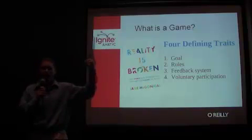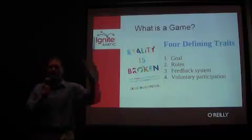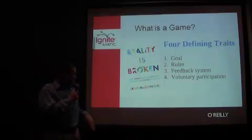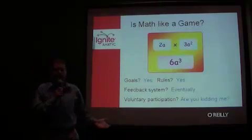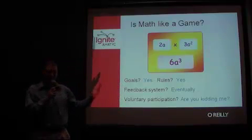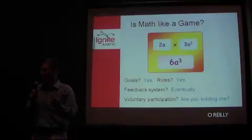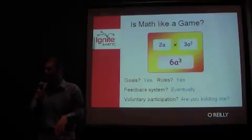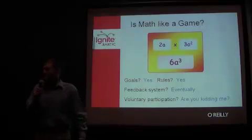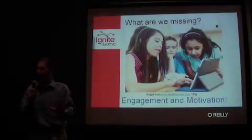A game has four things: a goal, a rule, feedback, and voluntary response. So my question to you is, does math have goals? Yeah. Does it have rules? Of course. Does it have a feedback system? Well, eventually we'll tell them right or wrong, or somebody else will have a homework system. But how about voluntary participation? We're so close — we get like three out of the four for a game.